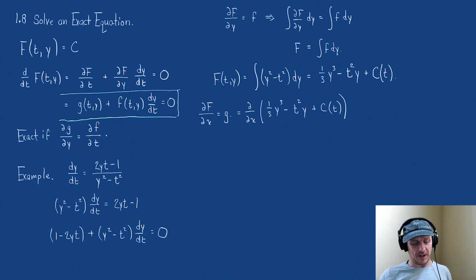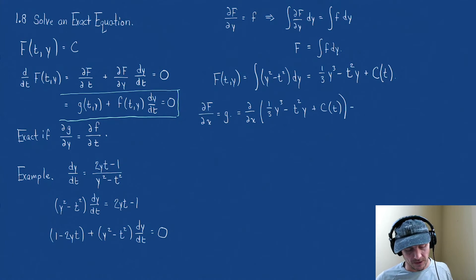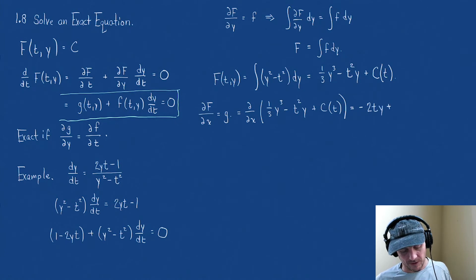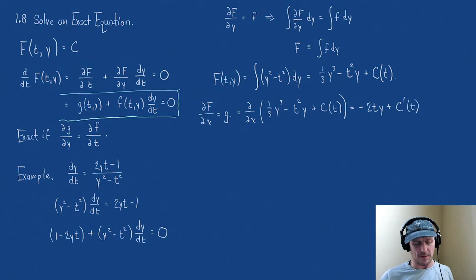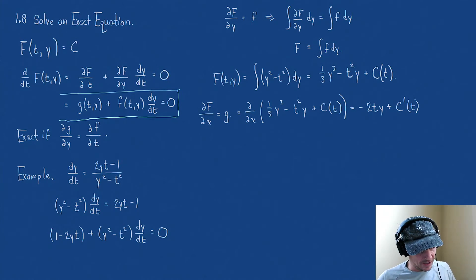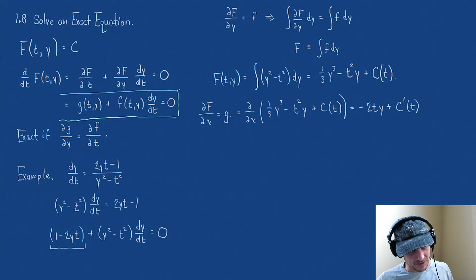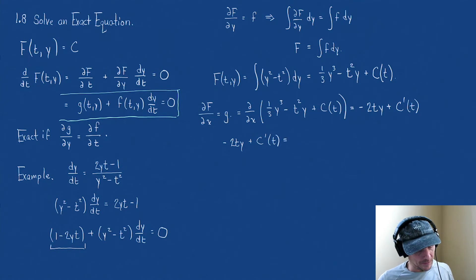Now we look at g. We said that the partial of capital F with respect to t gives us g, and then we can figure out what c(t) is. So we take the partial derivative with respect to t of (one-third y cubed minus t squared y plus c of t). The first term becomes zero, so we get minus 2ty plus c prime of t. This has to equal g, which is 1 minus 2yt.